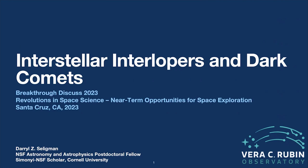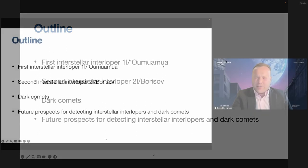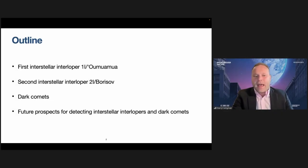I'll tell you about these interstellar interlopers and dark comets, these really exciting and mysterious small bodies that we've seen throughout the inner solar system just in the last couple of years. First, I'll tell you about the first two interstellar interlopers, 'Oumuamua and Borisov. Then I'll switch gears and talk about these dark comets, which are solar system objects but have some of the same mysterious properties as 'Oumuamua. I'll end by talking about the future prospects for detecting interstellar interlopers and dark comets with the forthcoming LSST.